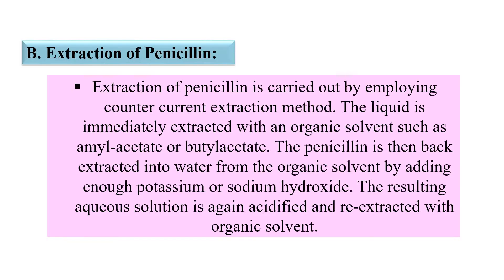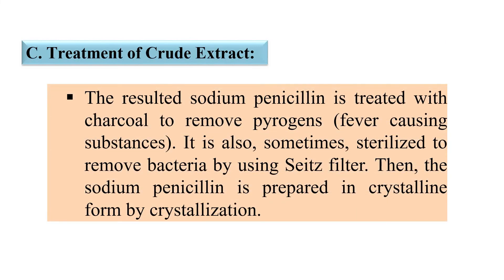Penicillin is obtained in the form of Sodium Penicillin. The next step is the treatment of the Crude extract: the resulting Sodium Penicillin is treated with charcoal to remove pyrogens, which are agents that can cause fever. It is also sometimes sterilized to remove bacteria using a Seitz filter. Ultimately, the Sodium Penicillin is prepared in crystalline form by crystallization, and these crystals can be packed as powder in sterile vials, as tablets, or sometimes as syrups for oral use.